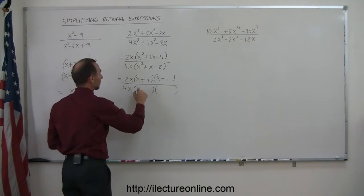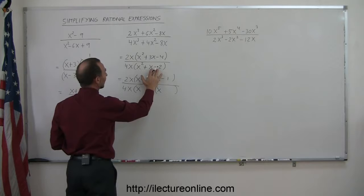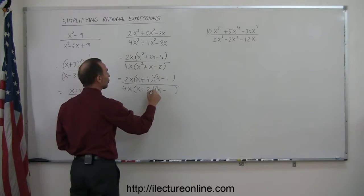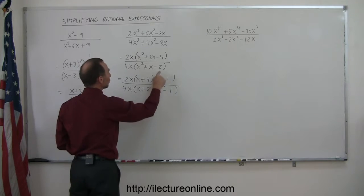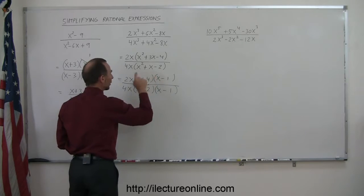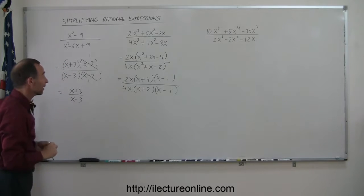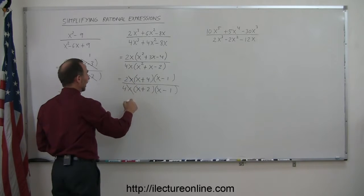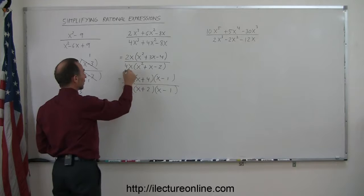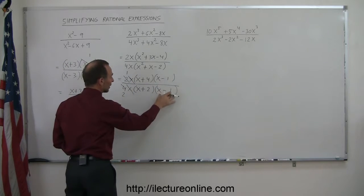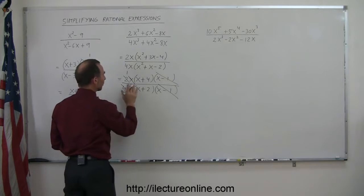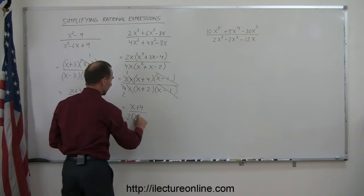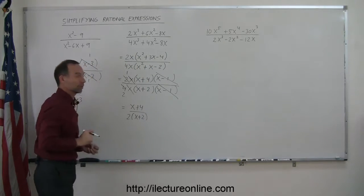For the denominator, I'll have an x and an x — again a negative and a positive. When I multiply them I get -2, and when I add them I get +1, so that would be +2 and -1. Negative 1 times positive 2 gives -2, and +2 added to -1 gives +1, so that's correct. Now we can simplify: we can cancel out an x and an x. And 2 and 4 are both divisible by 2, so this becomes 1 and 2. Over here I have (x - 1) and (x - 1) — they cancel out — and I'm left with (x + 4) in the numerator and 2(x + 2) in the denominator. That's the simplified form for this rational expression.